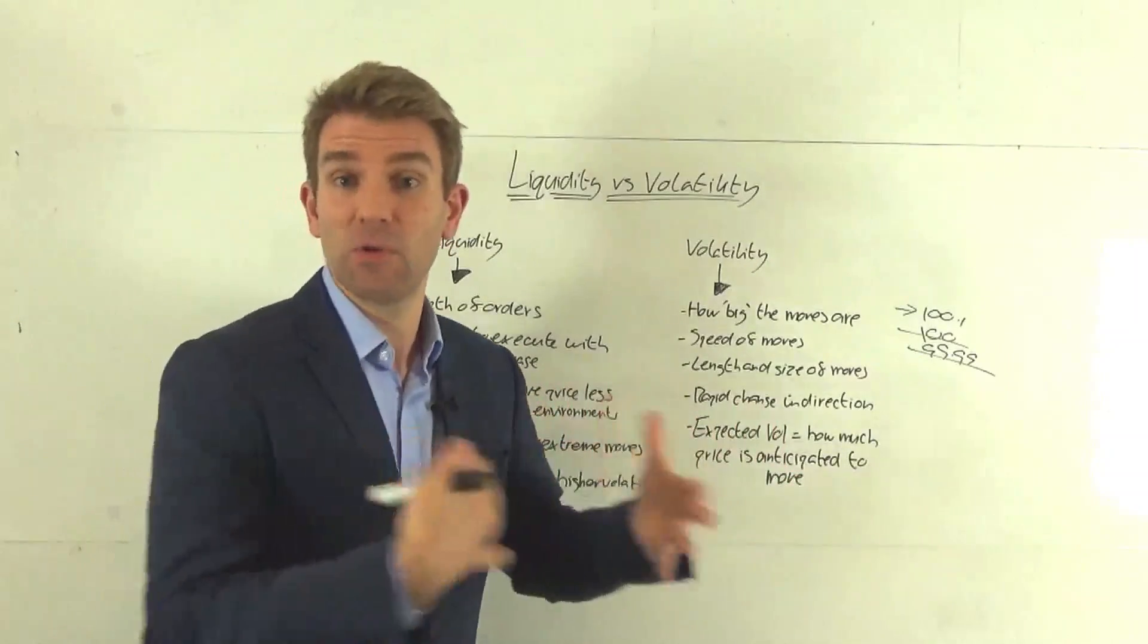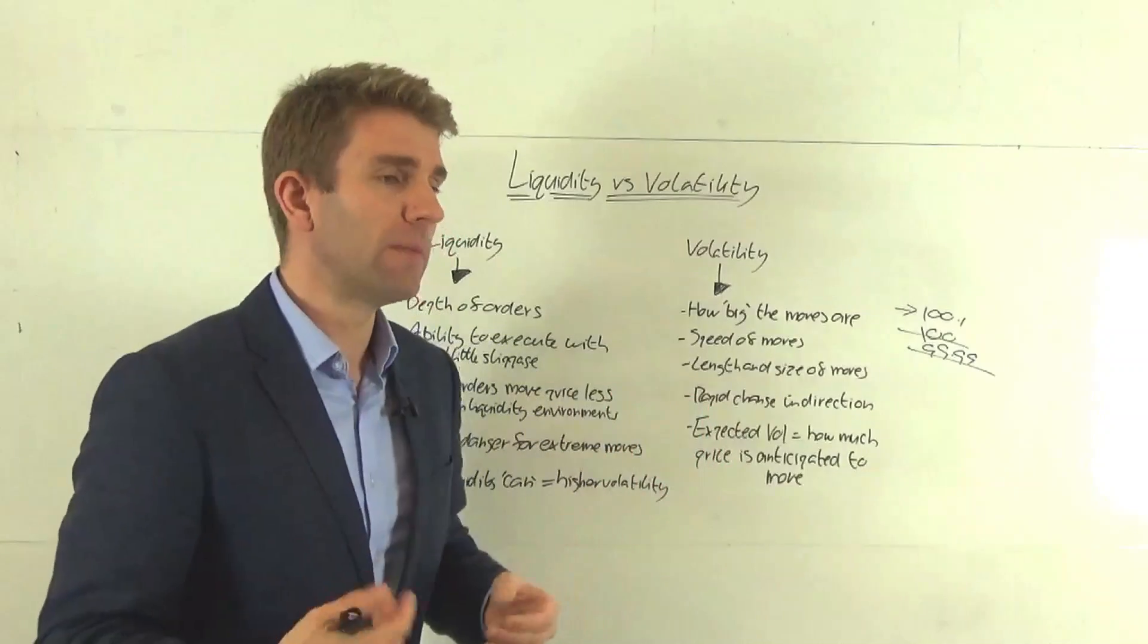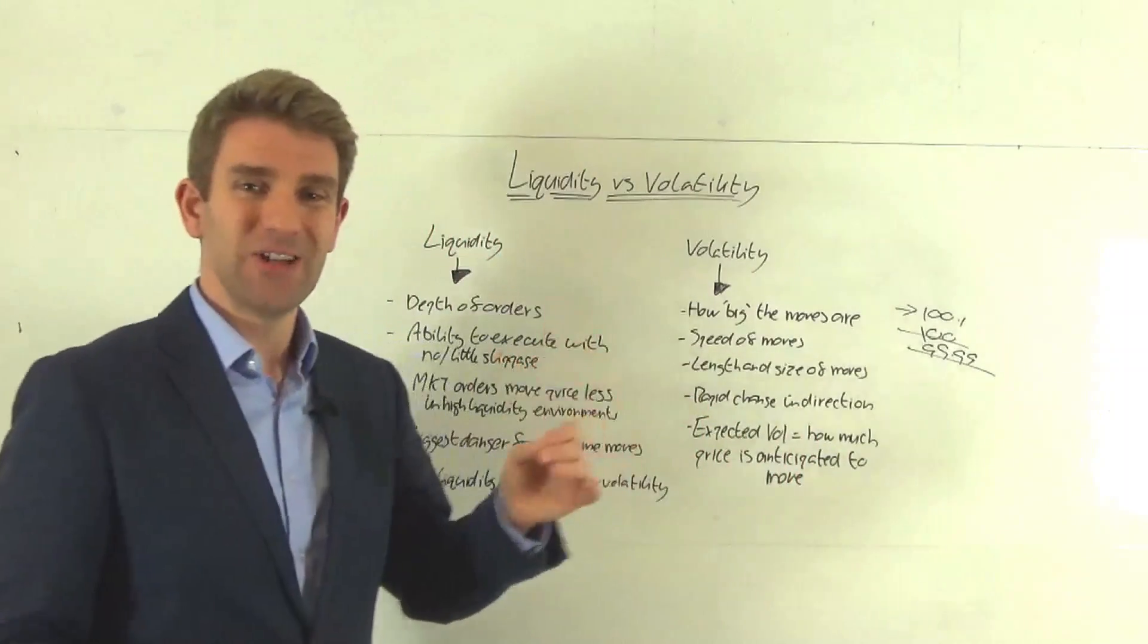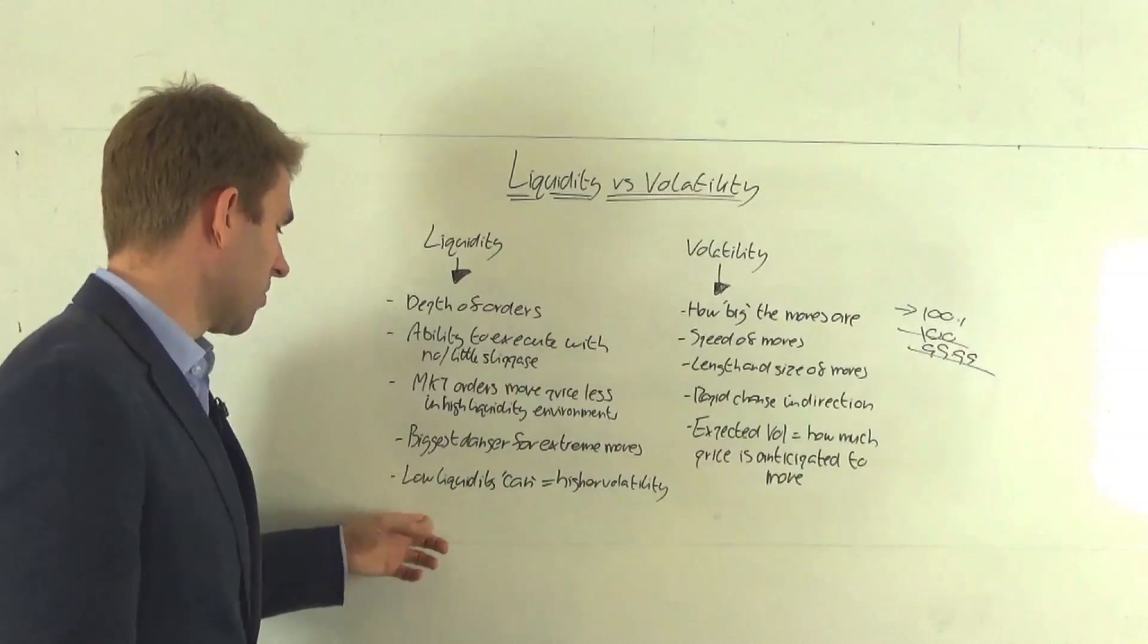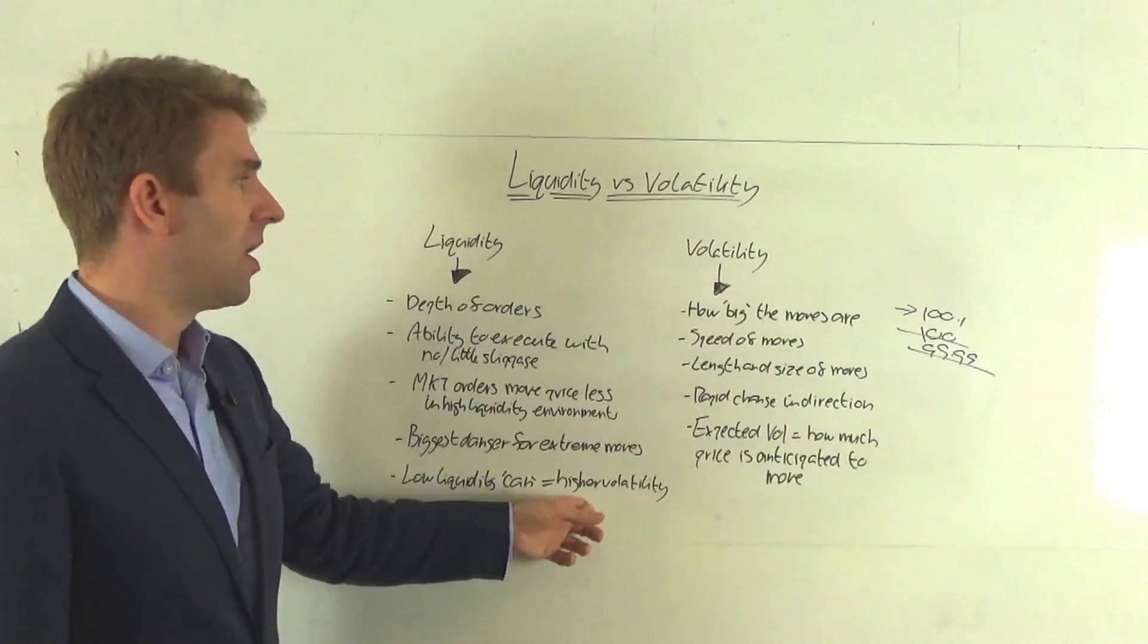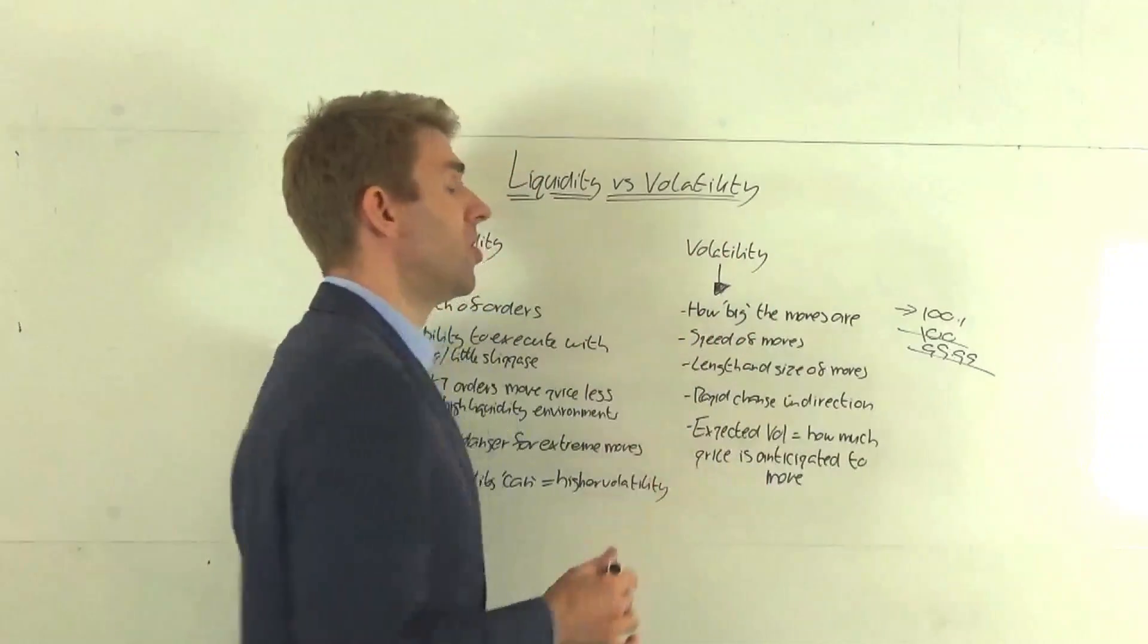Of course, that's what moves the market. So we're never going to stop that completely. That's how market finds its equilibrium and price point. But extreme moves generally caused by a lack of liquidity. And as I put in the final one, as low liquidity can equal higher volatility, as we saw in the flash crash, which leads us nicely to what is volatility. We've looked at liquidity, let's look at volatility.